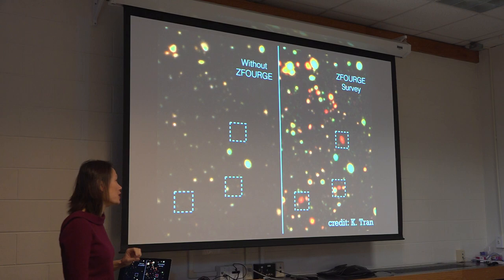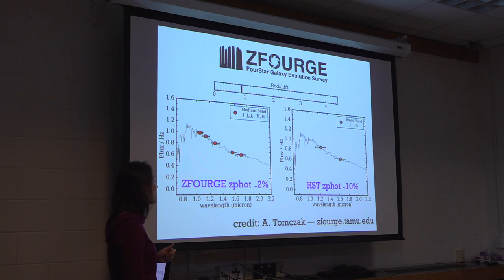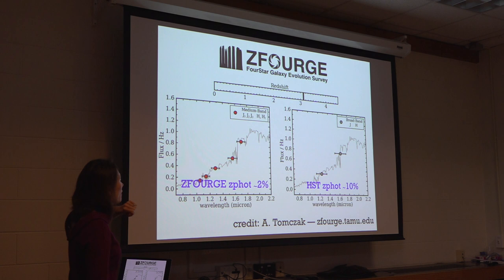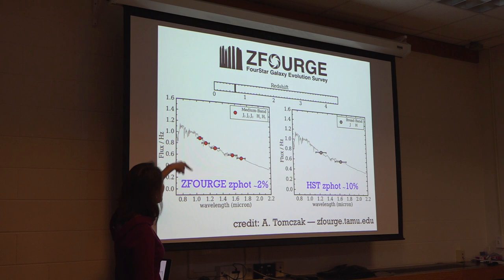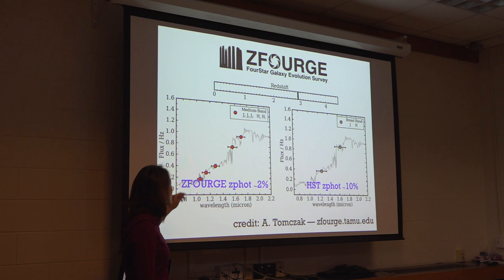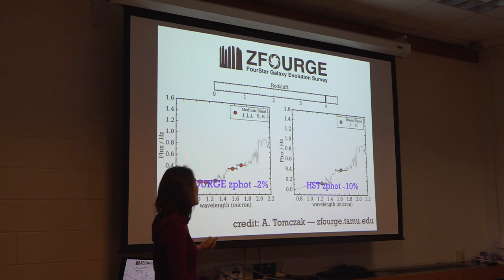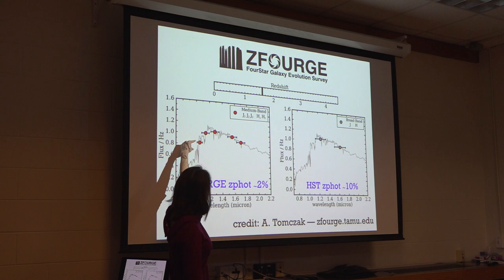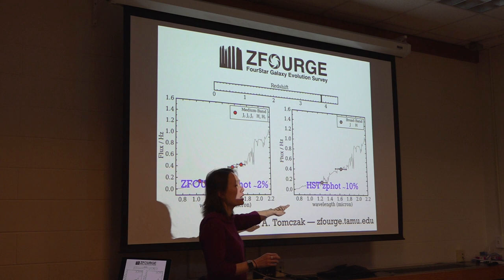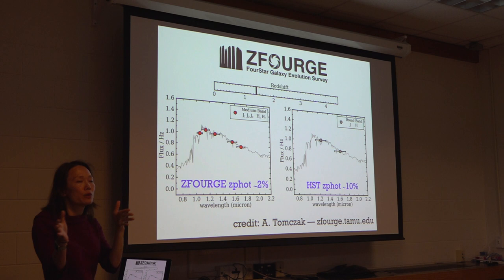With ZForge on Magellan, we split the broad bands into medium bands. We split J and H into two medium bands. As you see in the little animation done by my former student Adam Tomchak, the redshift corresponds to the SED. As the SED gets pushed to higher and higher redshift, you can see how the photometry samples different parts of the SED. Because you're sampling it more finely, you're able to get photometric redshifts with precision on the order of about 2% or so — whereas even with HST, because those filters are much broader, your uncertainty is about a factor of five times larger.